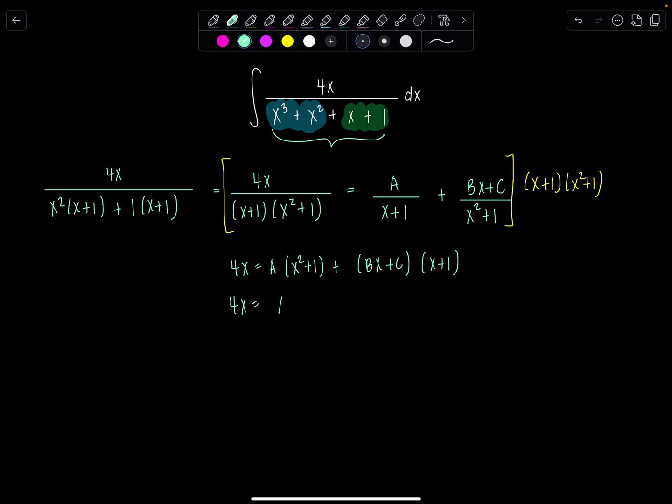So 4x equals ax squared plus a plus bx squared plus bx plus cx plus c.